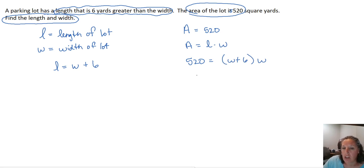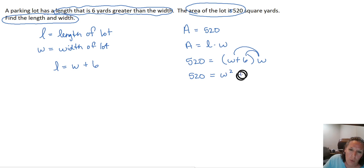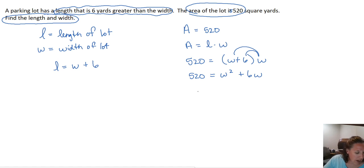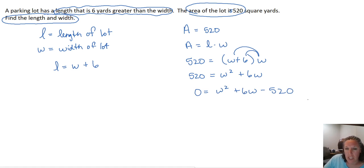What we have here is a quadratic equation. Let's go ahead and distribute our W. We get 520 equals W squared plus six W. We can solve this by any of the methods we've seen: factoring, completing the square, or the quadratic formula. Factoring, if it works, tends to be the quickest, and I believe factoring will work on this one. Let's move everything to one side by subtracting 520 from both sides.